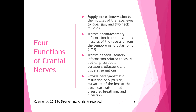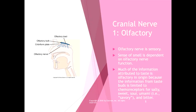Cranial nerve one — often written as CN I — is the olfactory nerve. It's a sensory nerve; the sense of smell is dependent on olfactory nerve function. Much of the information attributed to taste is actually olfactory in origin, because information from the taste buds is limited to chemoreceptors for salt, sweet, sour, umami, and bitter. The olfactory nerve is the only sensory nerve that has a direct connection to the cerebral cortex.